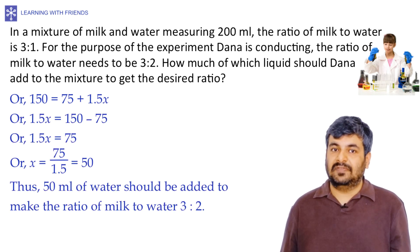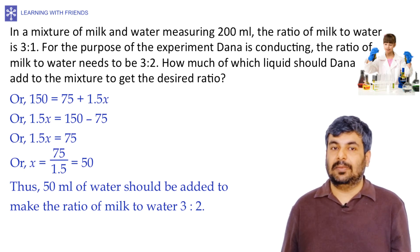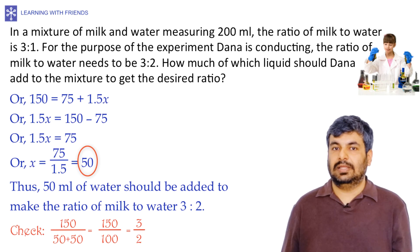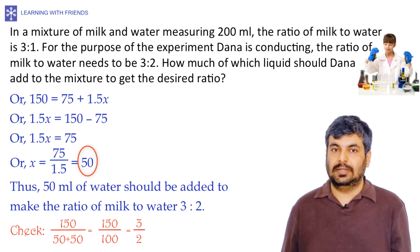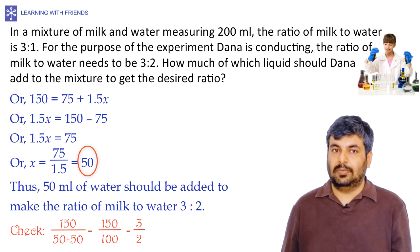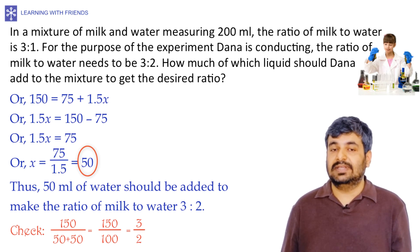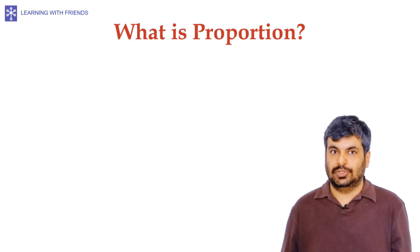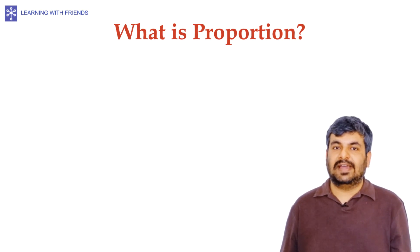So, adding 50 ml of water gives the ratio of milk to water of 3:2. Quick check: original milk is 150 ml, new water is 50 + 50 = 100 ml, and 150/100 is indeed 3:2.